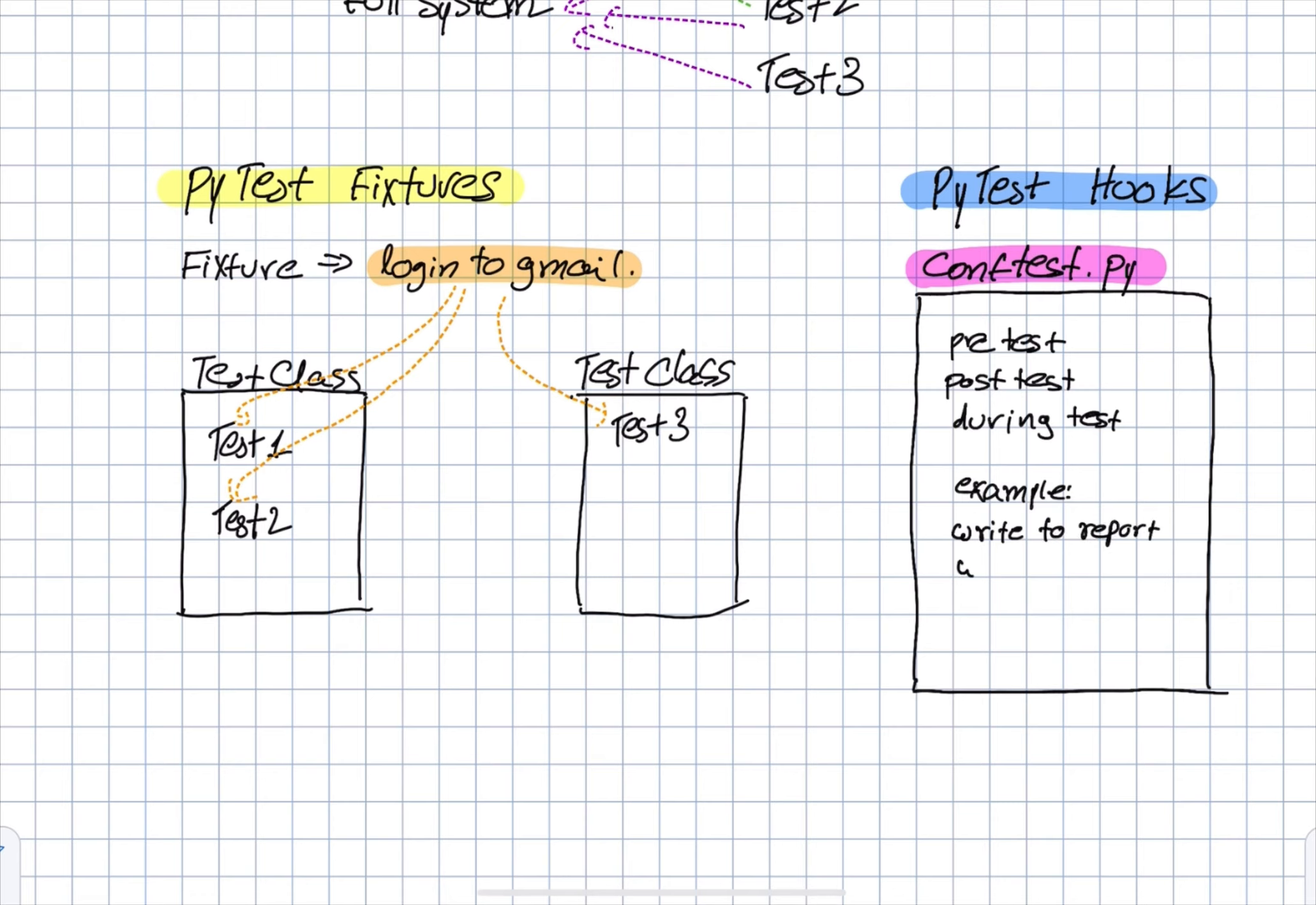We can also add custom hooks to add special functionality to our tests. In this example, we can see that we are defining a hook to write to the report, which can occur if the test has passed or failed, or even if it has some exception during the test. Also, we can define a hook that will write to the logger.